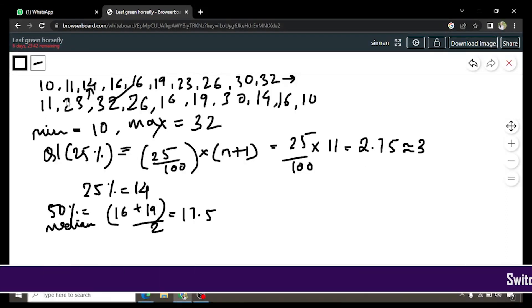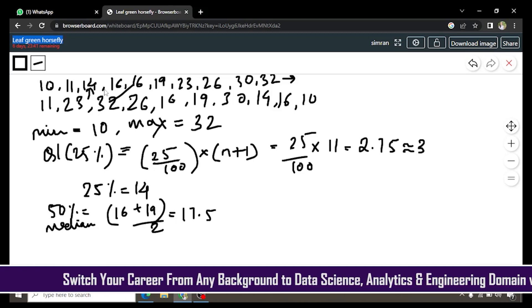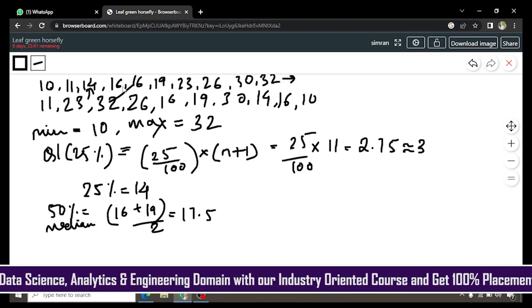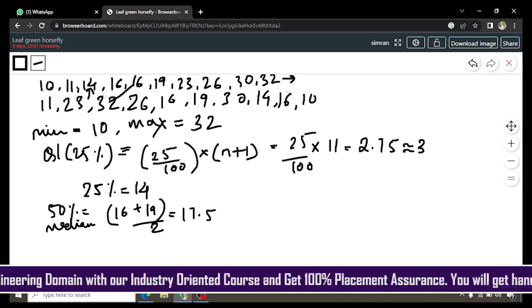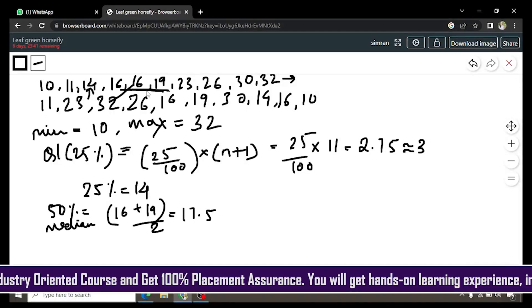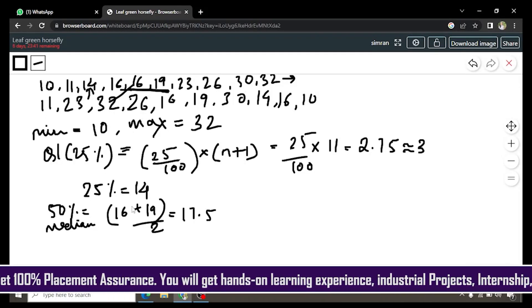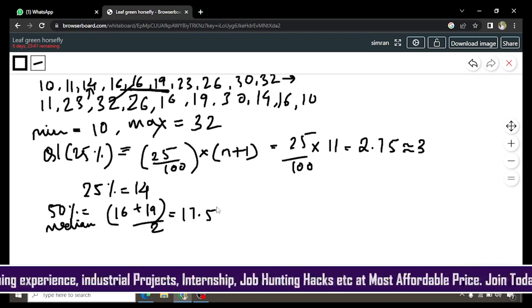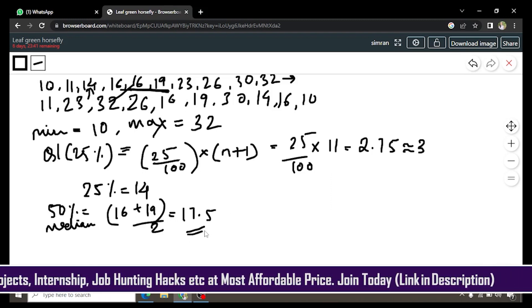Because here you see we have 10 elements, 16 is repeated twice and see, leaving 4 elements from each side, 1, 2, 3, 4 and 1, 2, 3, 4. So 16 and 19 are the middlemost values. So you will simply add and then divide by 2 to get the average which is 17.5. So this is the median value.